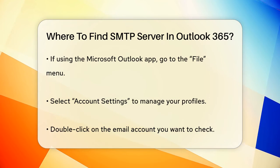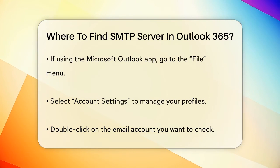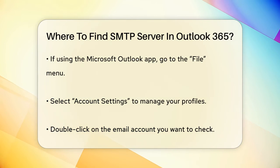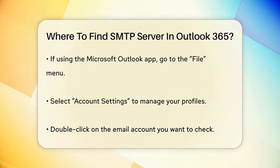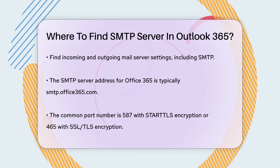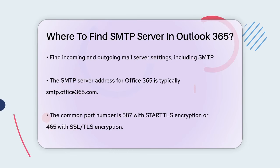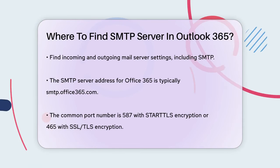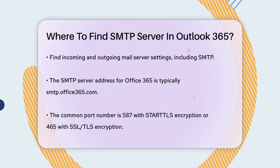If you're using the Microsoft Outlook app, you can also find these settings by navigating to the File menu, then selecting Account Settings and managing your profiles. From there, you'll see a list of your email accounts. Double-click on the account you want to check and you'll see the incoming and outgoing mail server settings, including the SMTP server.